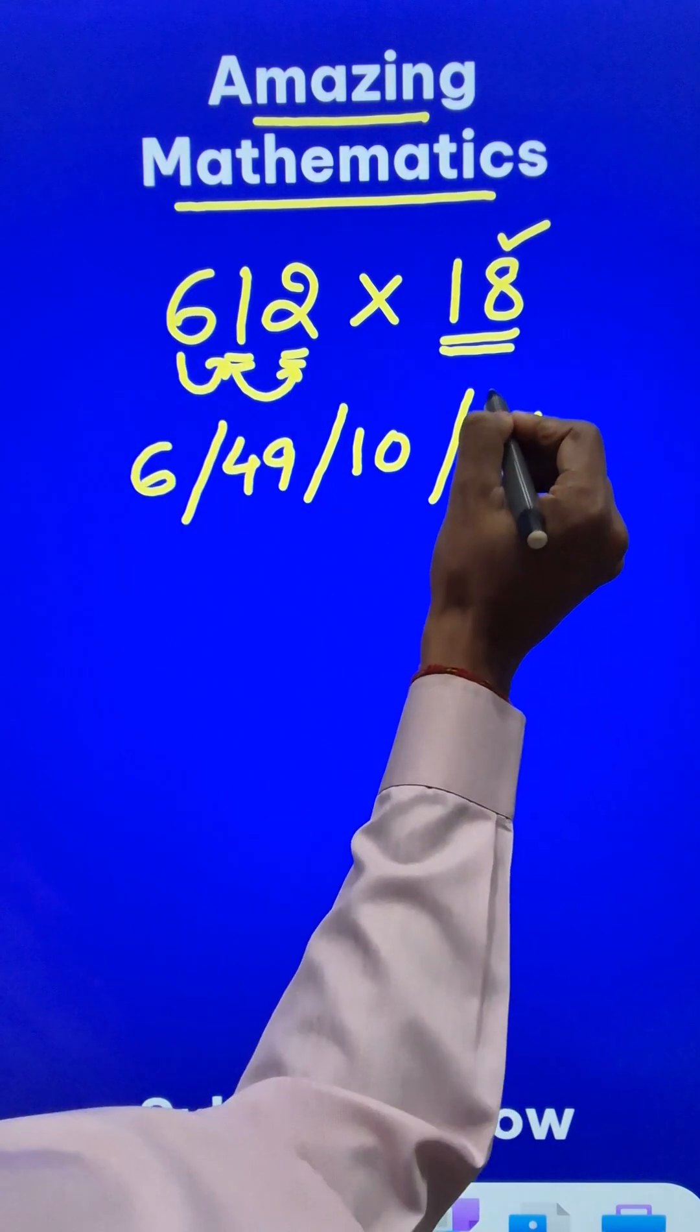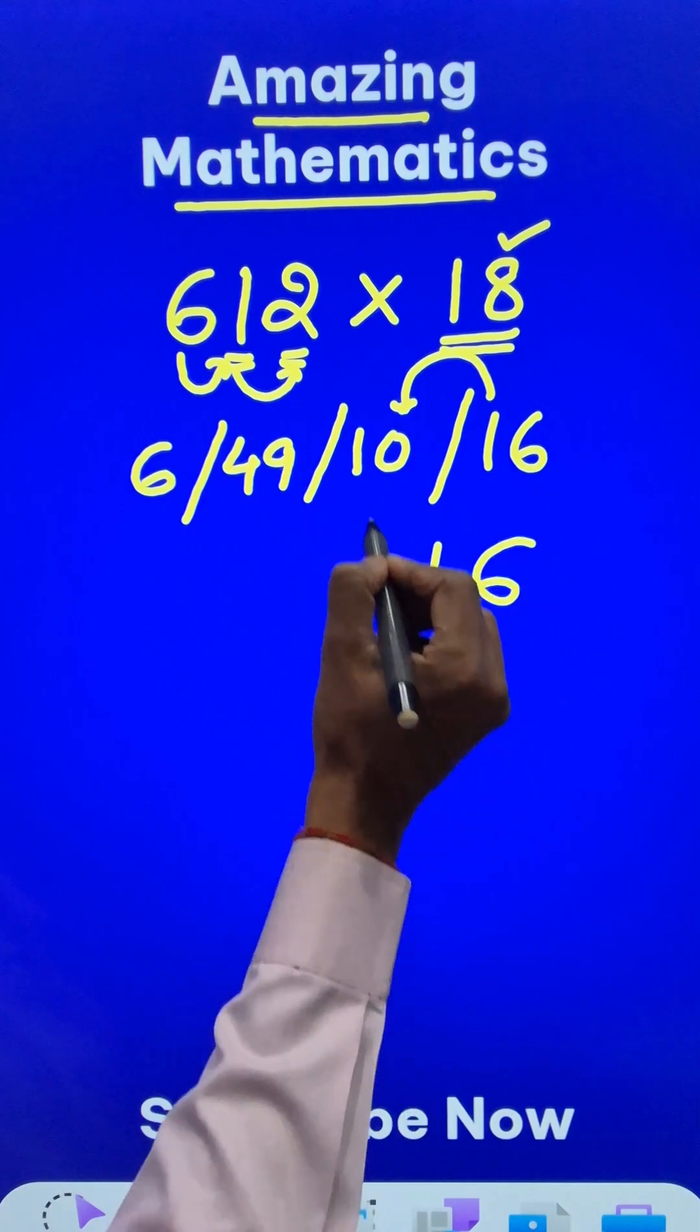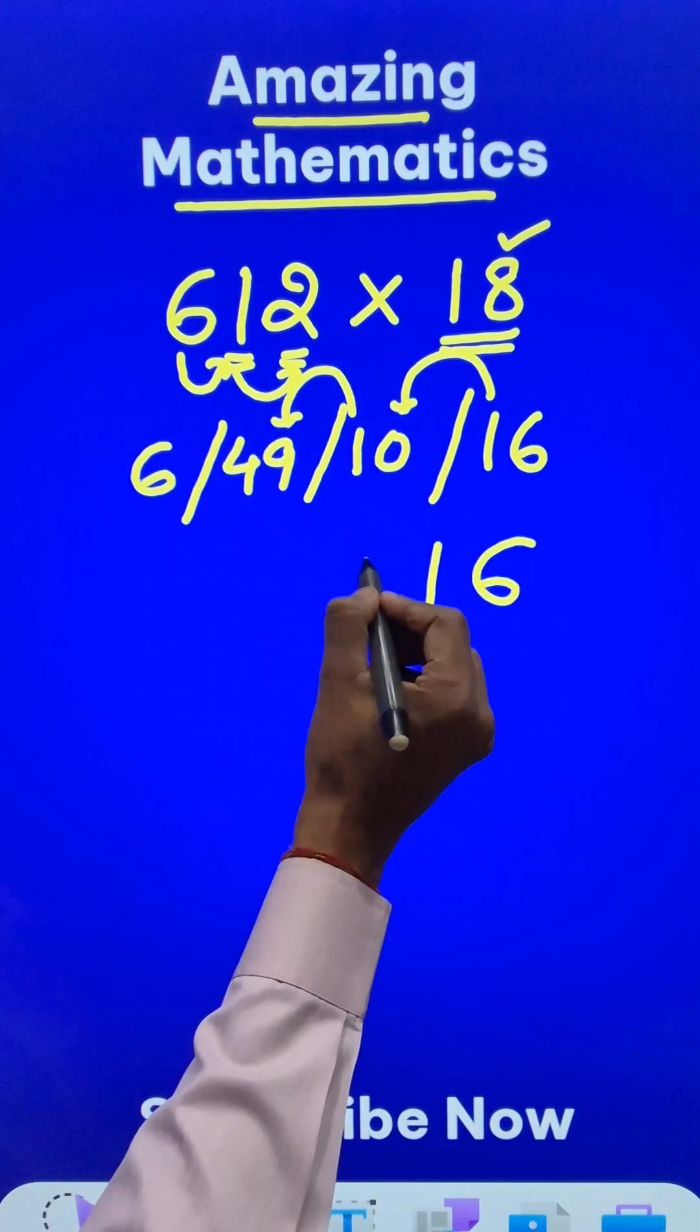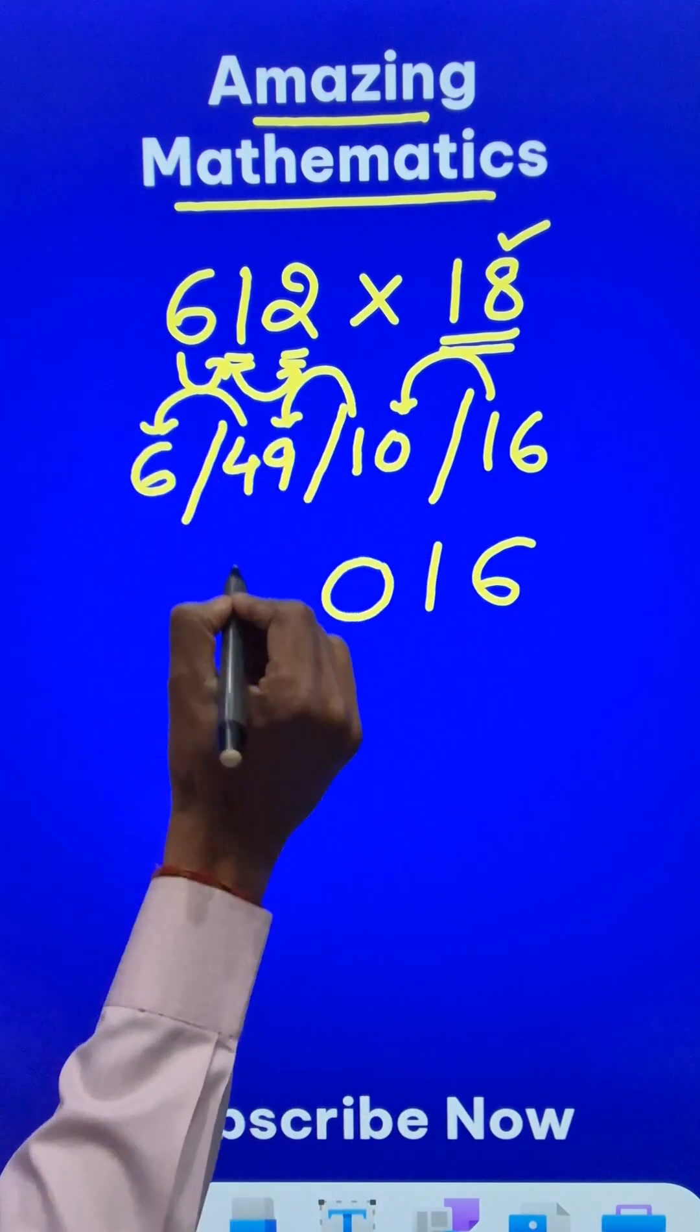Now start writing from the right-hand side. 6, 1 carry. So this becomes 11. 1, 1 carry. This becomes 50. So 0, 5 carry. 6 plus 5, 11.